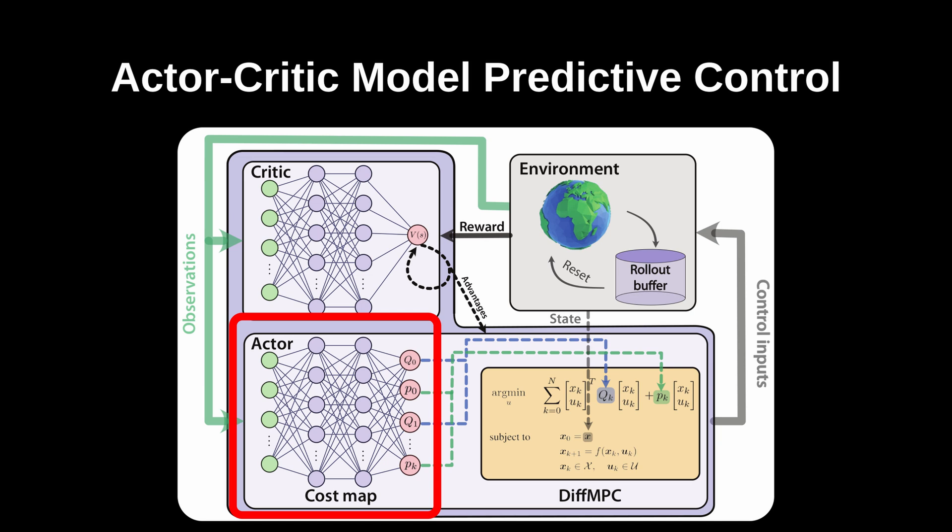The second component of our actor is the cost map, a deep neural network that encapsulates the dependencies between observations and the cost function of the MPC. Unlike conventional MPC, our approach emphasizes robustness and adaptability, allowing for the optimization of intricate objectives through exploration and refinement.